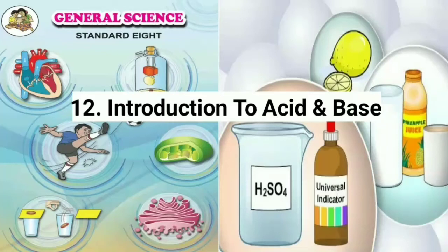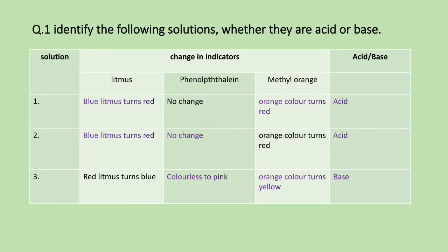Today we are going to discuss exercise of Chapter 12: Introduction to Acid and Base. Question one: identify the following solutions whether they are acid or base. Solution one — blue litmus turns red, phenolphthalein shows no change, methyl orange turns red. So it is acid. Solution two — blue litmus turns red, phenolphthalein no change, methyl orange turns red. So it is acid.